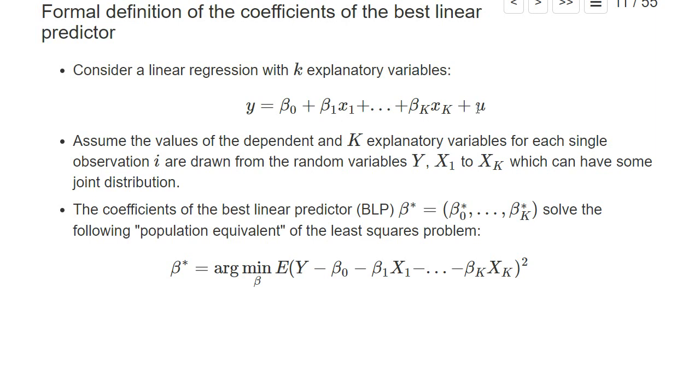Now you could think that this error term, this random variable, is a function of this beta. So think of this beta just being some numbers that you can pick. Then the error term is just given by y minus beta_0 minus beta_1 x_1 and so on.